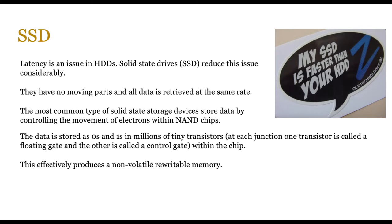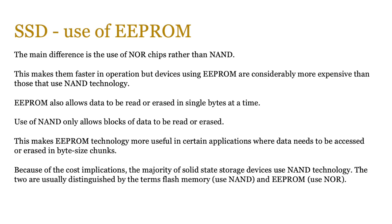The main difference between SSDs and EEPROM is the kind of chips used to construct them — the use of NOR chips rather than NAND chips. SSDs normally use NAND technology, which is cheap and reliable; NOR is a bit more expensive, which is where EEPROM comes into play. EEPROM also allows data to be read or erased a single byte at a time, whereas NAND only allows blocks of data to be read or erased. So EEPROM is much more useful where you can deal with single bytes rather than blocks. Because of the cost implications, most solid state drives are NAND technology.